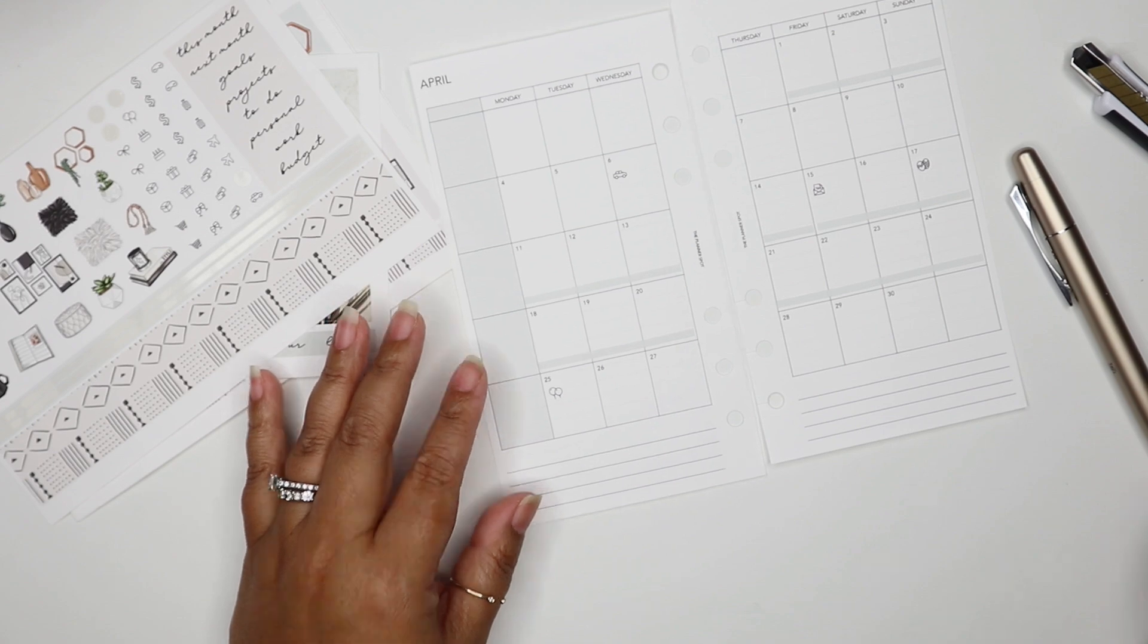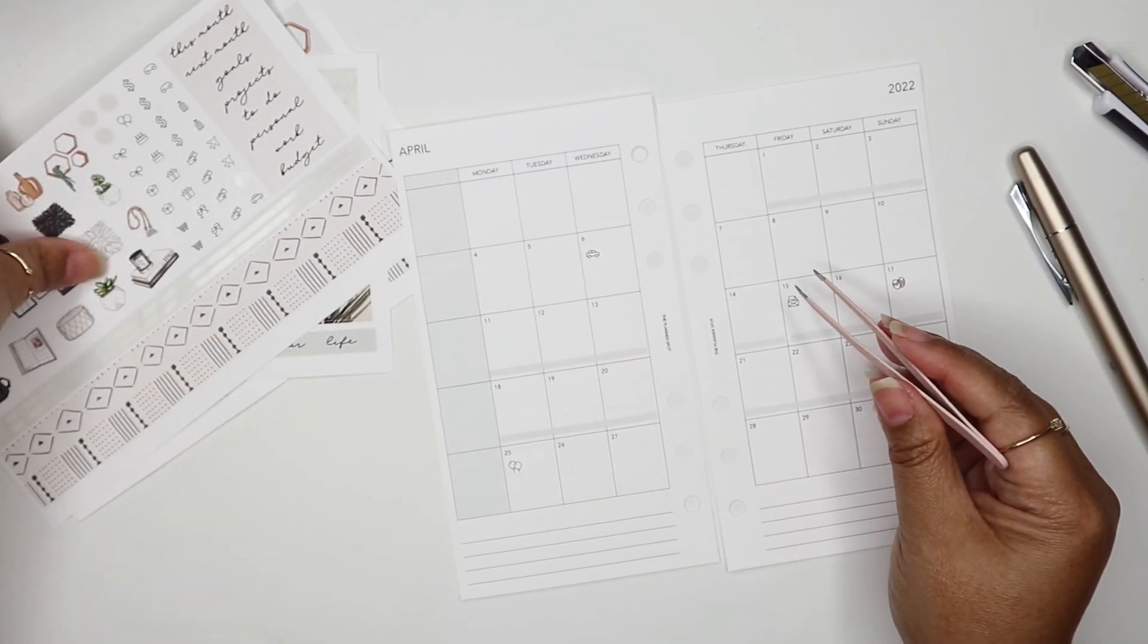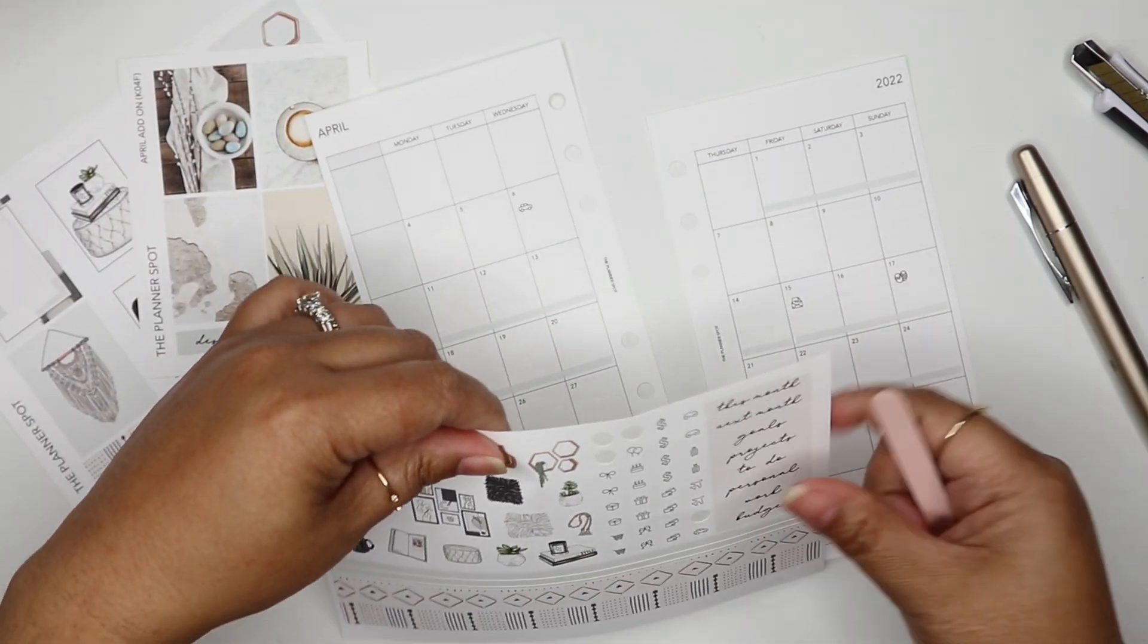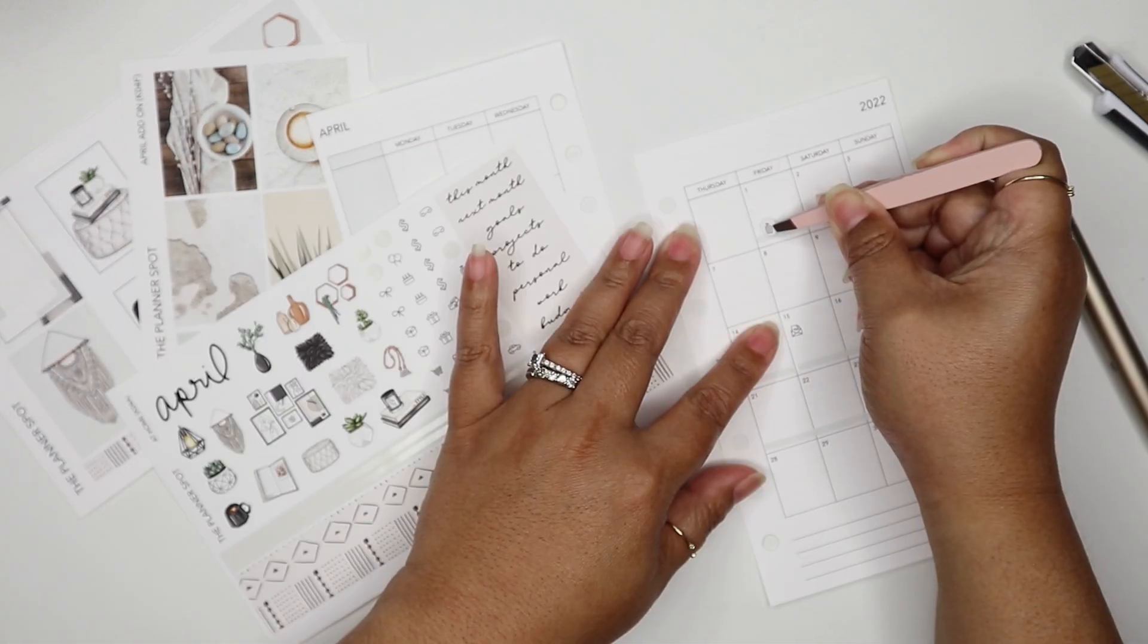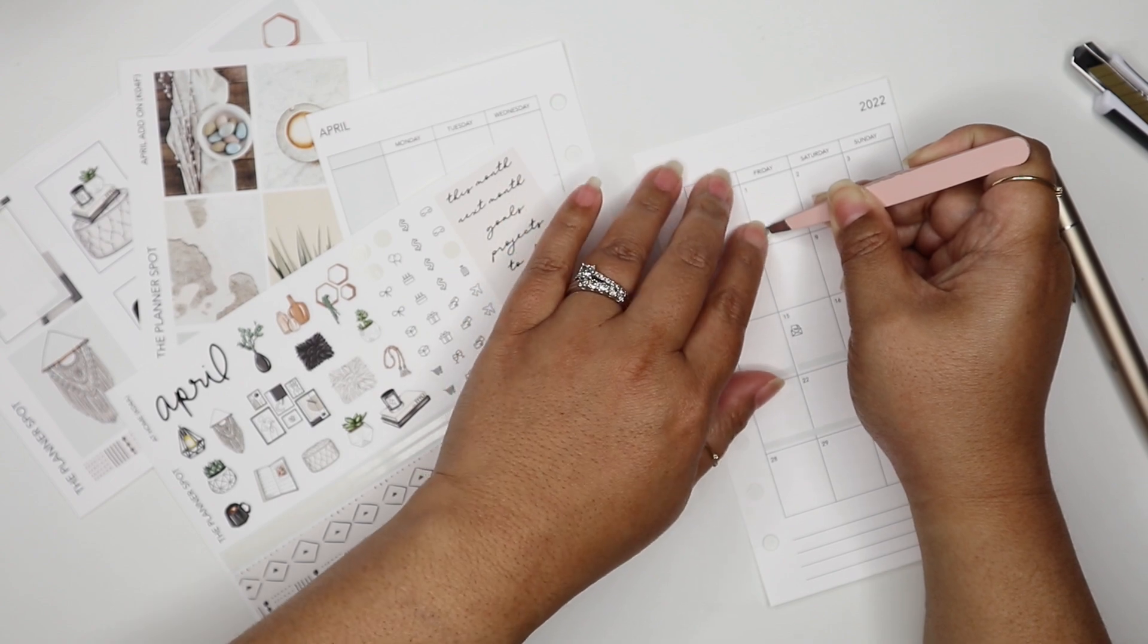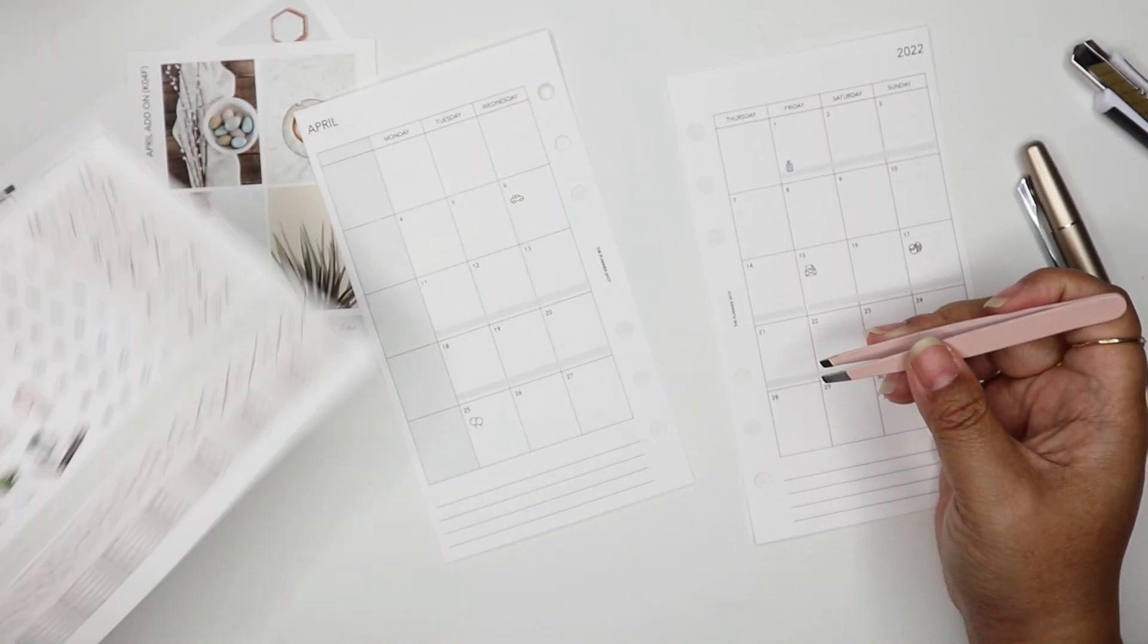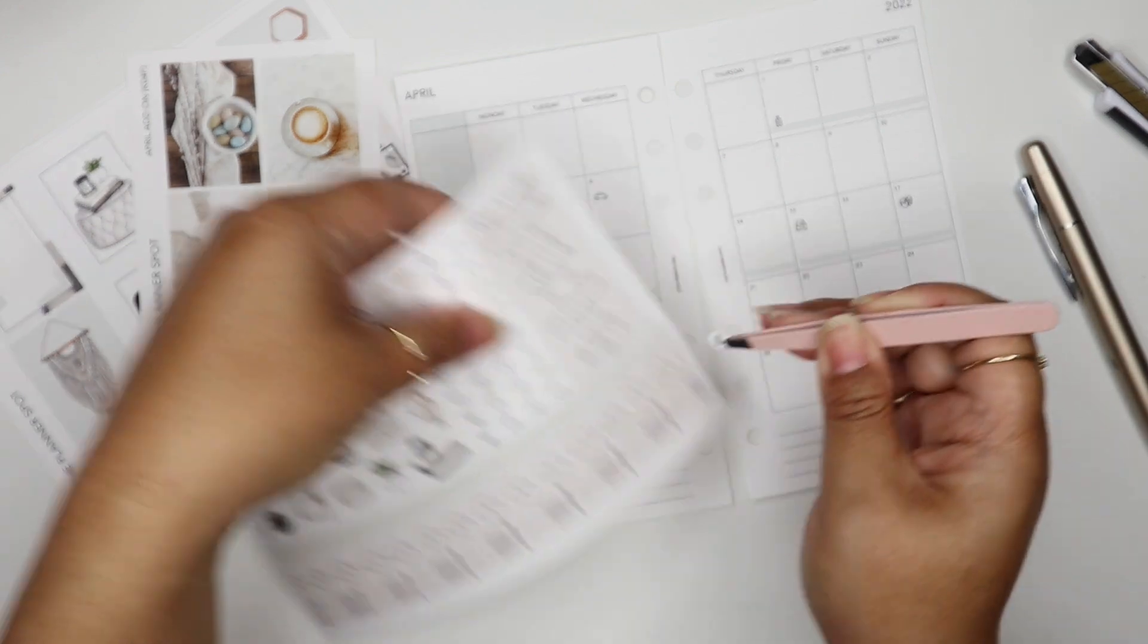That's all the personal stuff. For my daughter's camp, maybe a luggage icon. I think I'm going to put it down here to be with the washi strip. Good thing I have two luggages here.